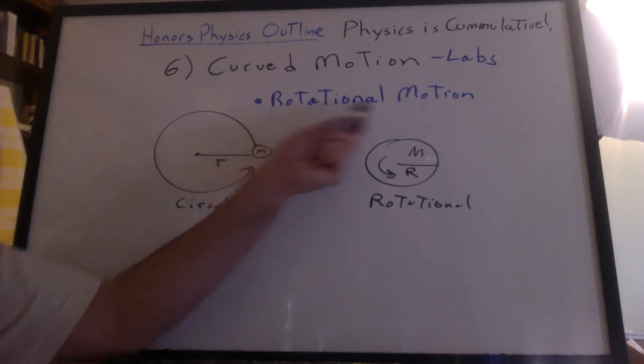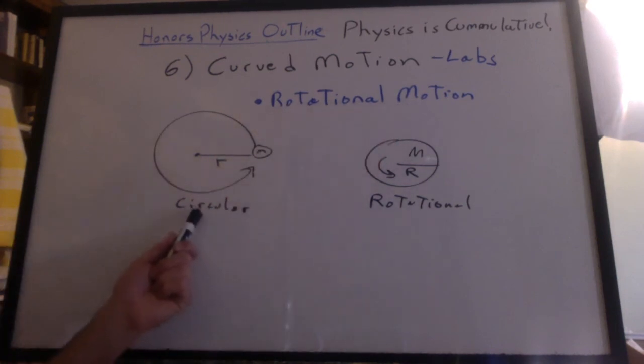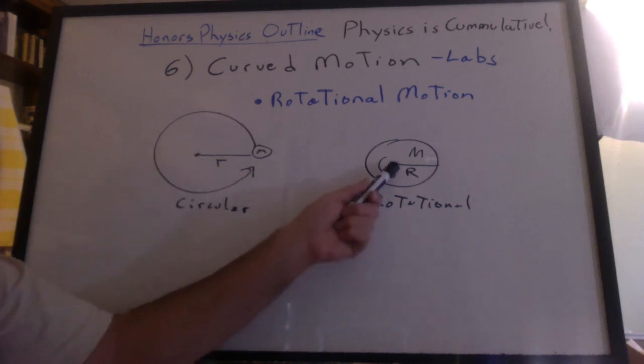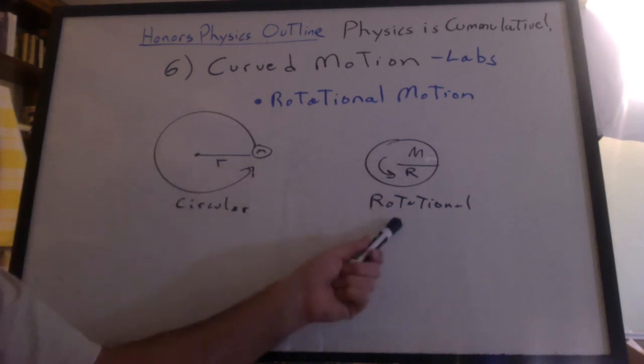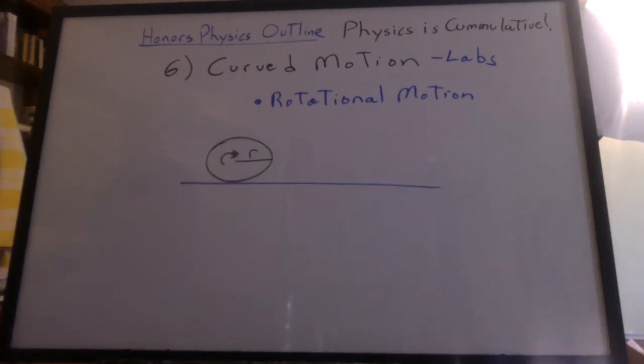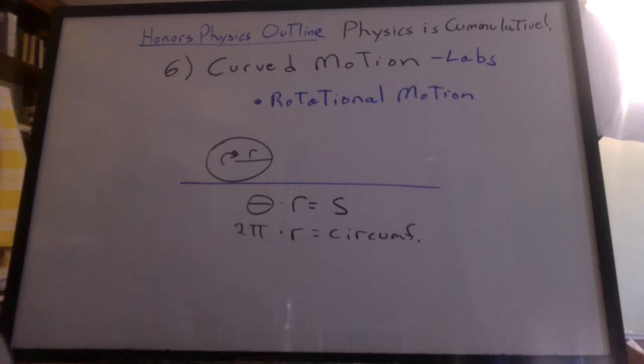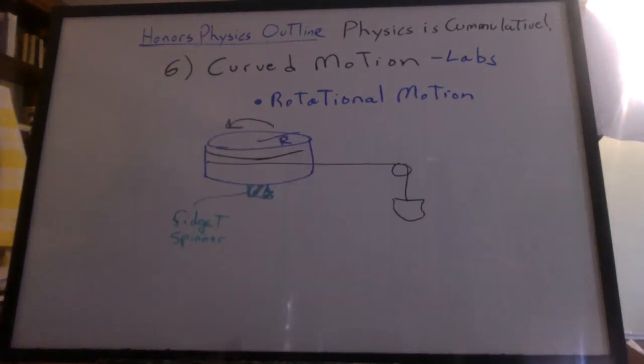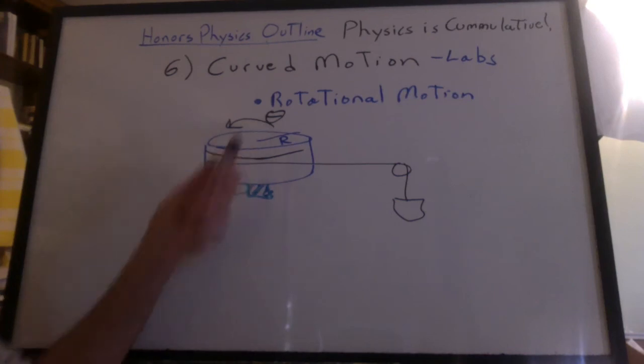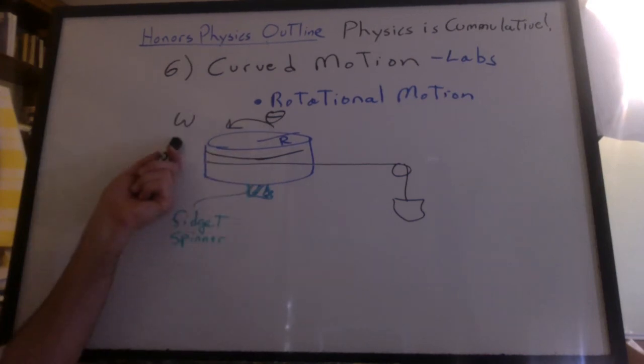Then we moved to rotational motion. We saw the difference between an object moving about a point outside of itself as circular motion and the object rotating about an axis through its center as rotational motion. We did a lab where we rolled a can across the table. We tested a formula you learned in math. It was the same as 2 pi r equals the circumference. We all made fidget spinner turntables. We measured the angle. We measured the angular velocity. We measured the angular acceleration.